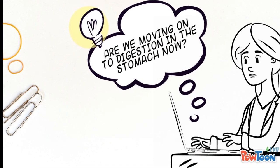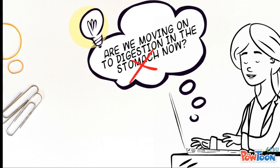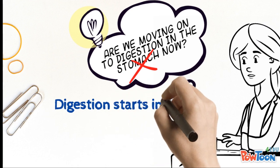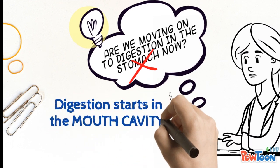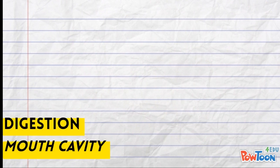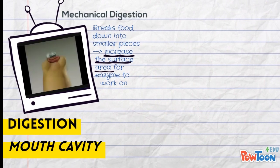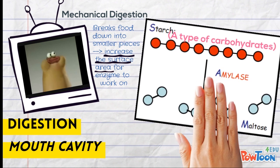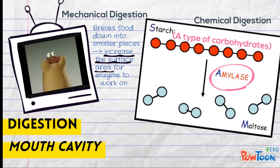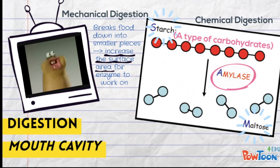Are we moving on to the second stage — digestion in the stomach? Yes to the second stage, but no, not in the stomach. Digestion actually starts in the mouth cavity. The chewing action also acts as a type of mechanical digestion, breaking down food into smaller pieces to increase the surface area for digestive enzymes to work on later. The presence of the enzyme amylase in the mouth cavity also chemically digests starch into maltose, which is a simpler form of sugar.